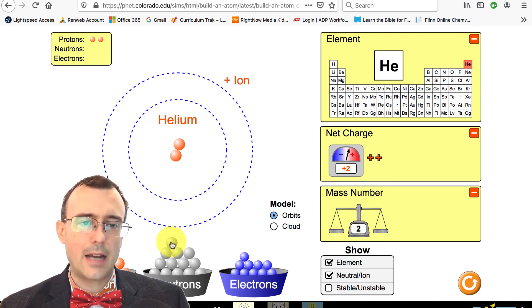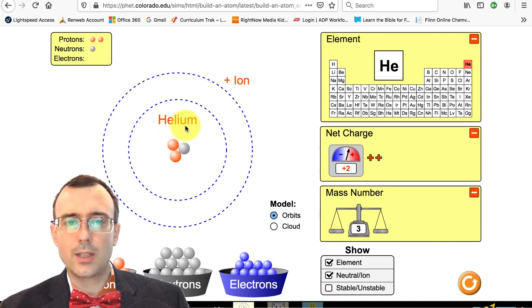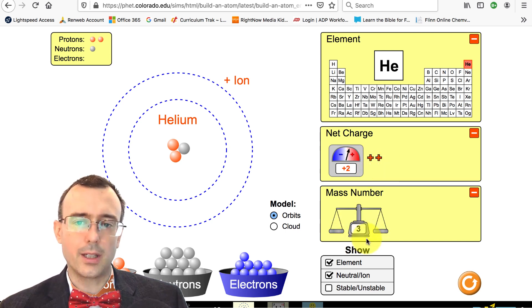What about neutrons? Let's add a neutron to it. We noticed the name didn't change at all. It's still helium, and the net charge is still plus two. But now the mass number is bigger. So it has a mass of three.